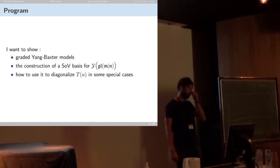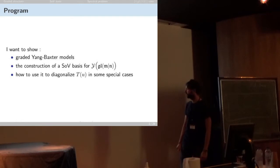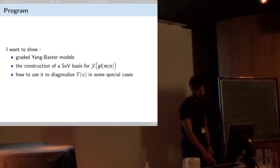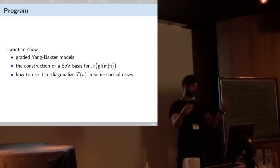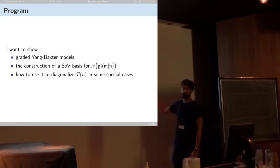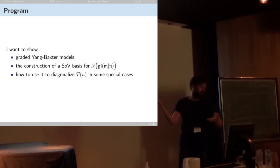I want to recall what graded integrable models are, how to construct the separated basis for these models, and then how to use it to diagonalize the transfer matrix and solve the spectral problem. I say 'in some special cases' because we have a conjecture that we haven't been able to verify in full generality.